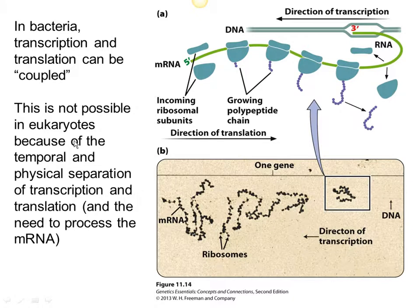That's not possible in eukaryotes, because in eukaryotes the RNA would have to be processed first: adding the 5' cap, adding the 3' poly-A tail, and splicing out the introns. And then it has to leave the nucleus before it can be translated.